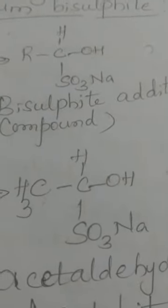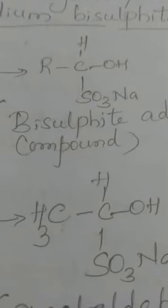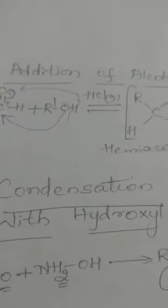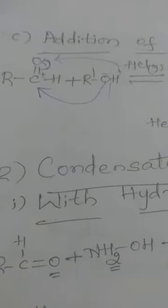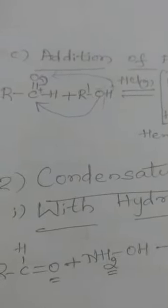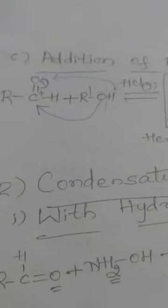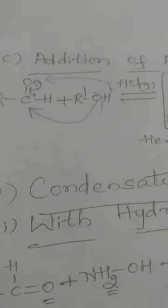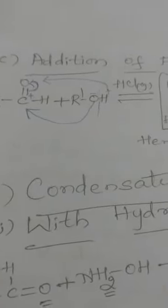One more addition reaction of aldehydes is the addition of alcohols. Alcohols have the formula ROH — using R' to distinguish it from the R of the aldehyde. Aldehydes react with alcohols on passing dry hydrogen chloride gas (HCl gas), and the products formed are gem dialkoxy compounds.